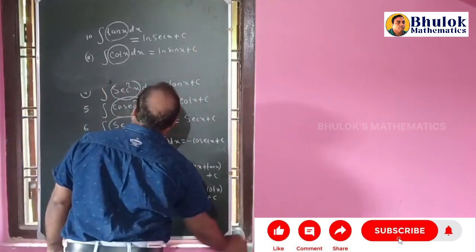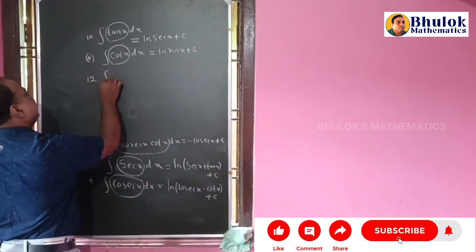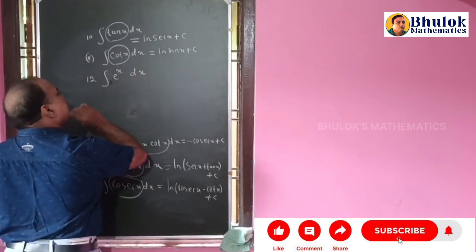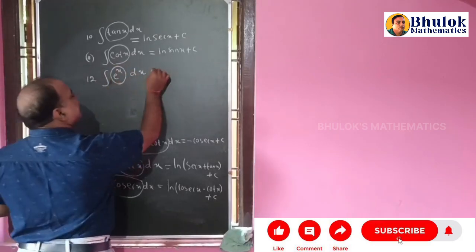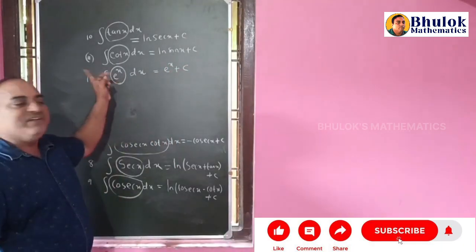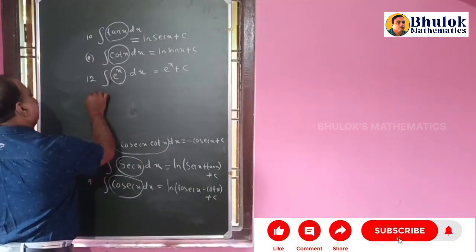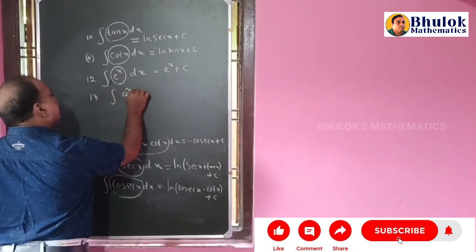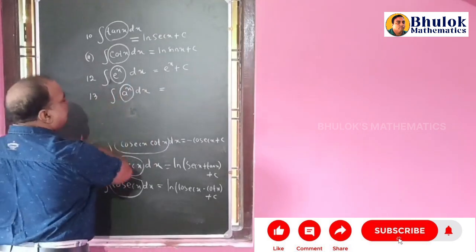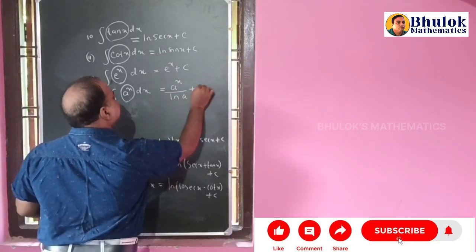Formula number 12: the integral of e^x dx is equal to e^x plus c. Formula number 13: the integral of a^x dx. Our aim is to find the function whose derivative is a^x. That is a^x divided by ln a plus c.